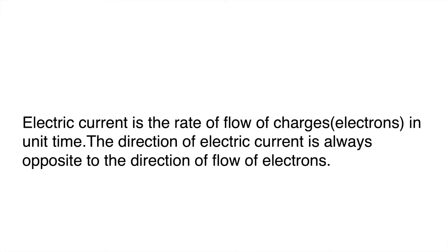Electric current is the rate of flow of charges or electrons in a unit time. The direction of electric current is always opposite to the direction of flow of electrons. We always consider electric current as the rate of flow of electrons. In an atom, only electrons are moving particles — protons and neutrons are not moving. It is the movement of electrons that produces electric current in a wire or circuit.